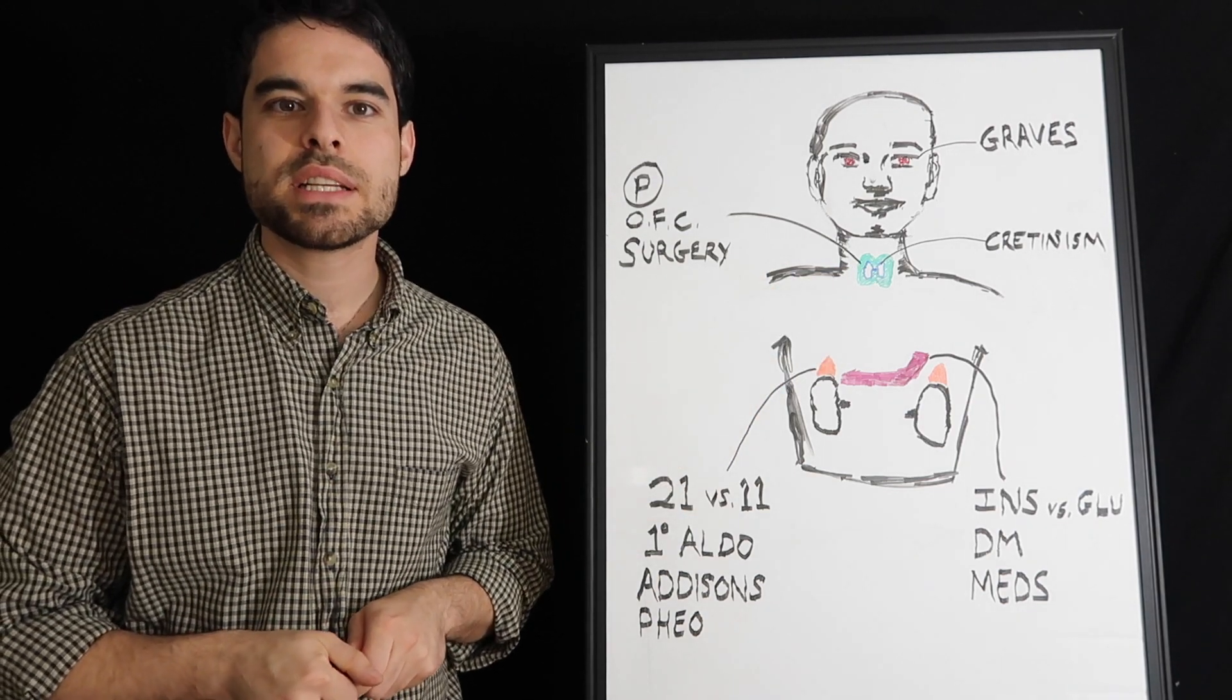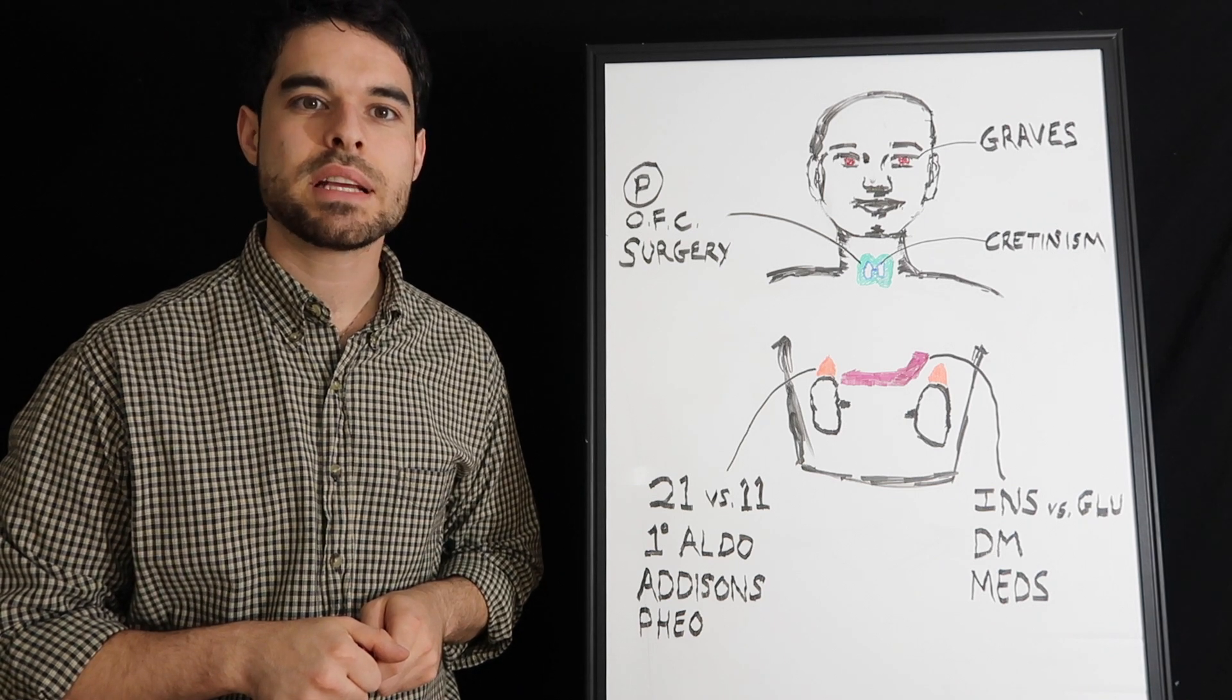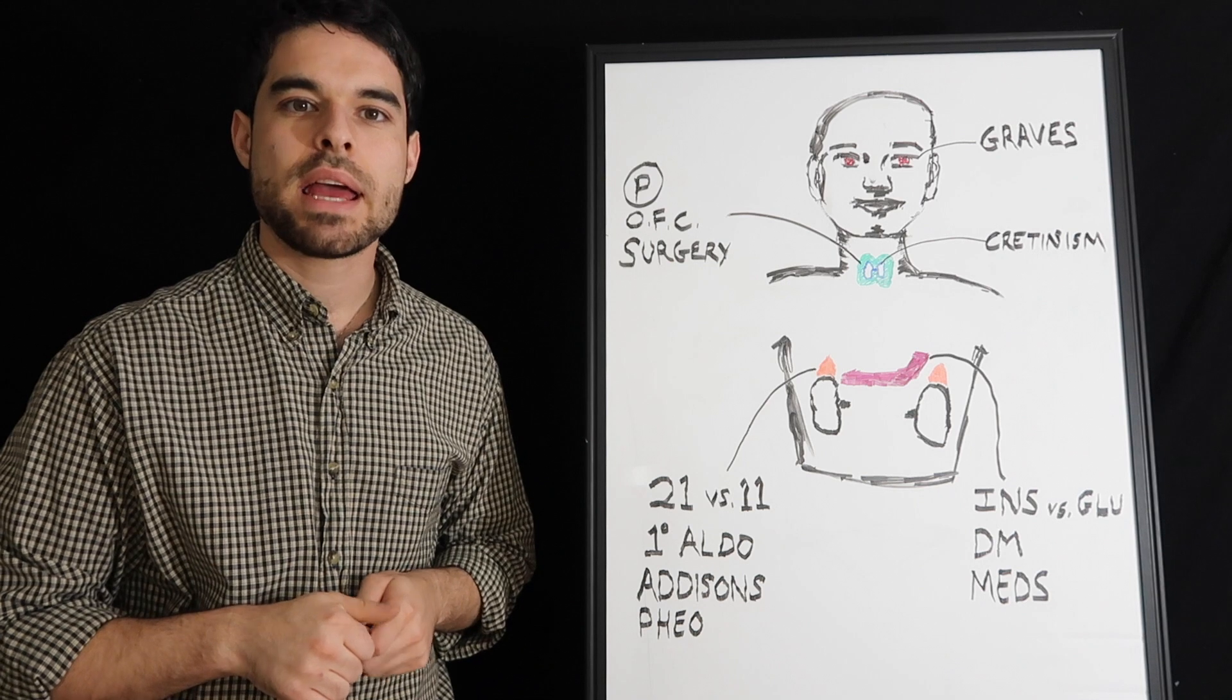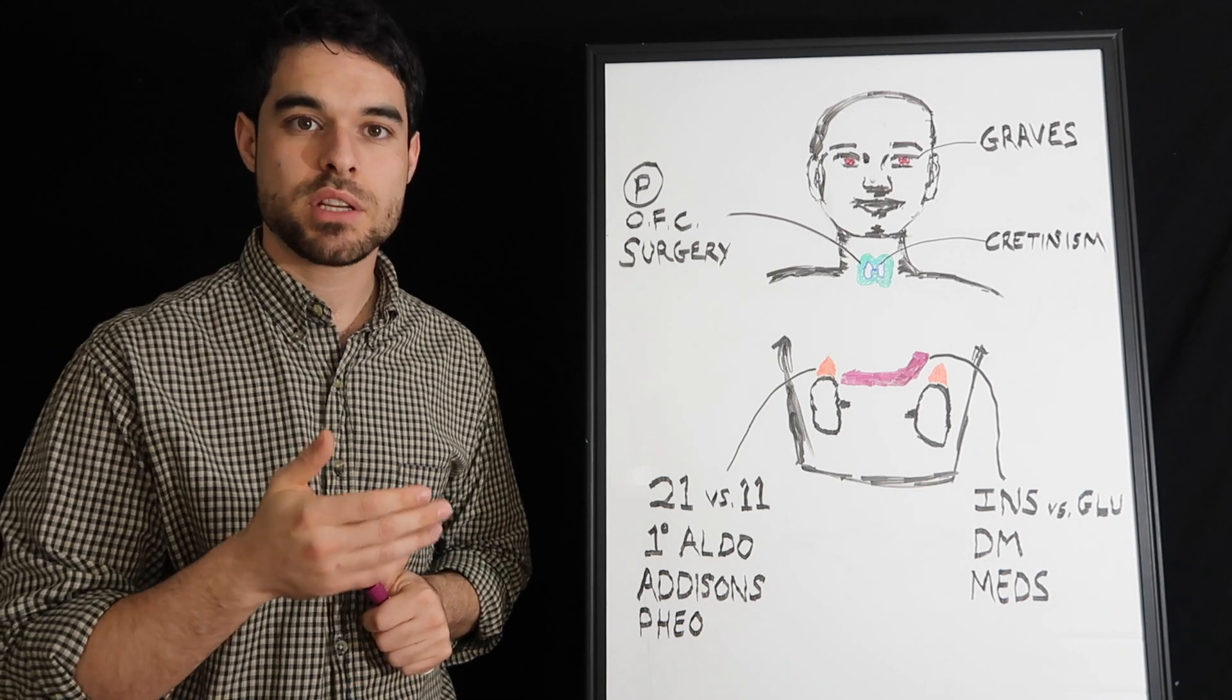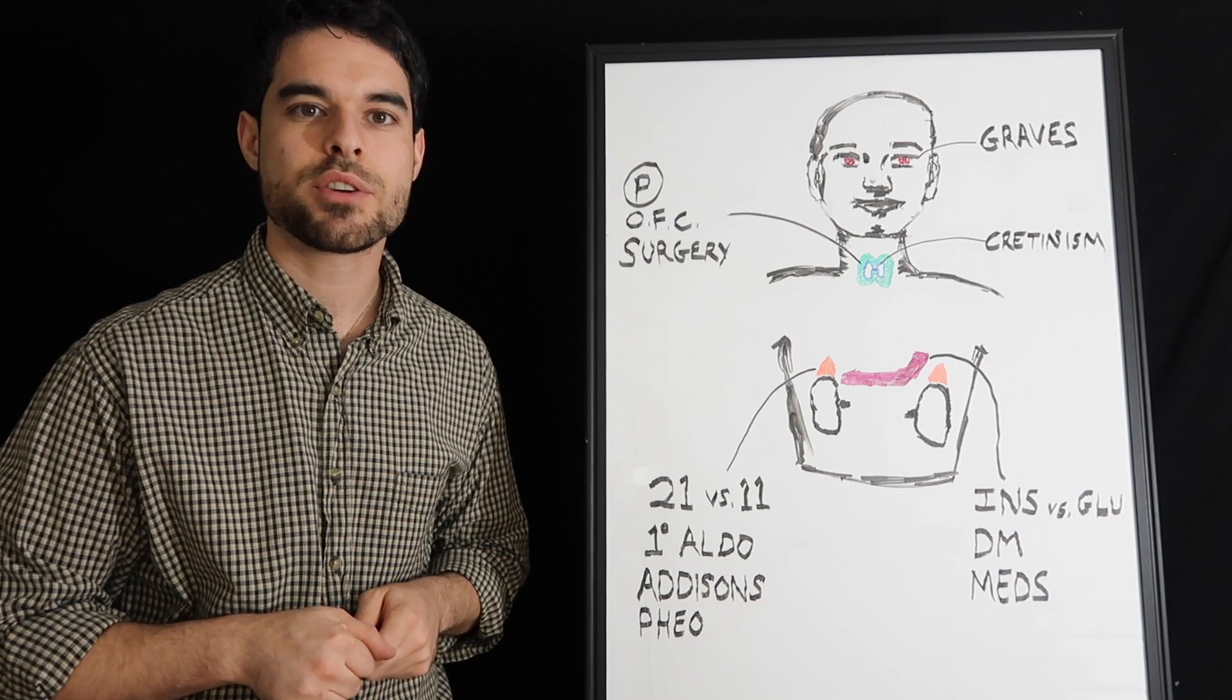Congenital hypothyroidism is called cretinism and the baby is going to have a very large belly, protruding umbilicus, a very large tongue, maybe some congenital delays. And because he won't have enough T3 or T4, you can expect his TSH to be turned on and pretty high.